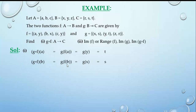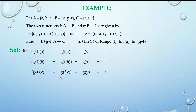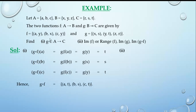For g(f(c)): f(c) = y, then g(y) = t. So g of f as ordered pairs is {(a,t), (b,s), (c,t)}, where A is our domain and C is our co-domain.